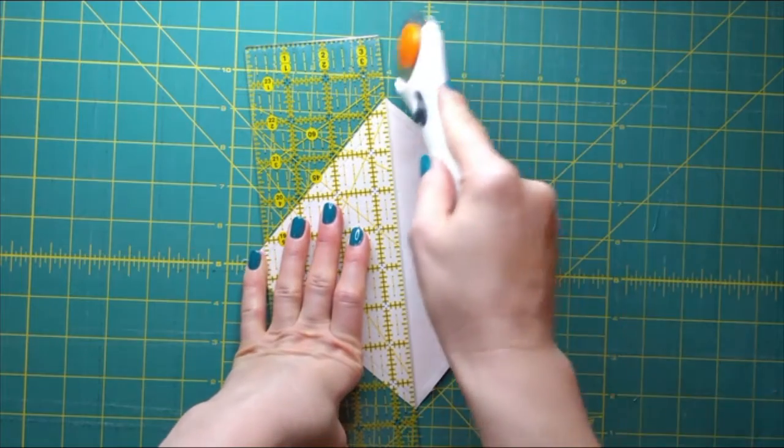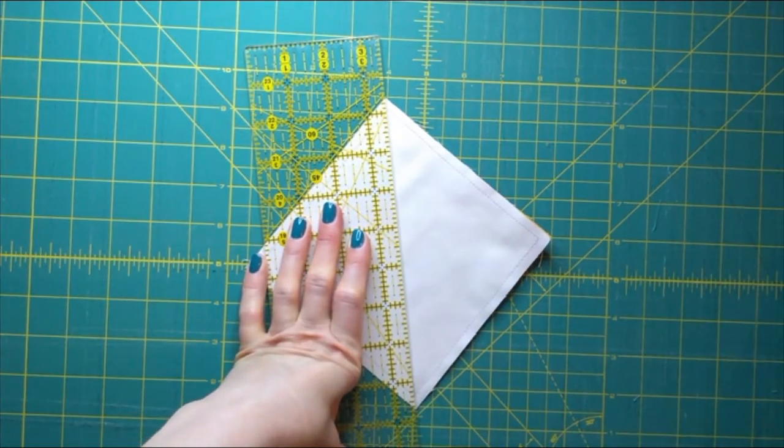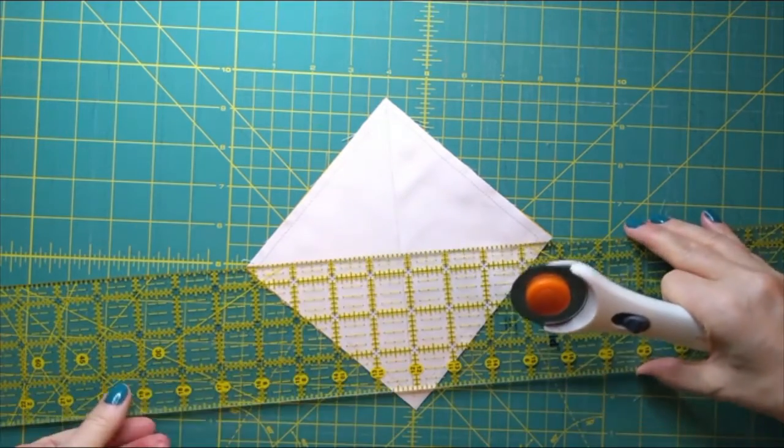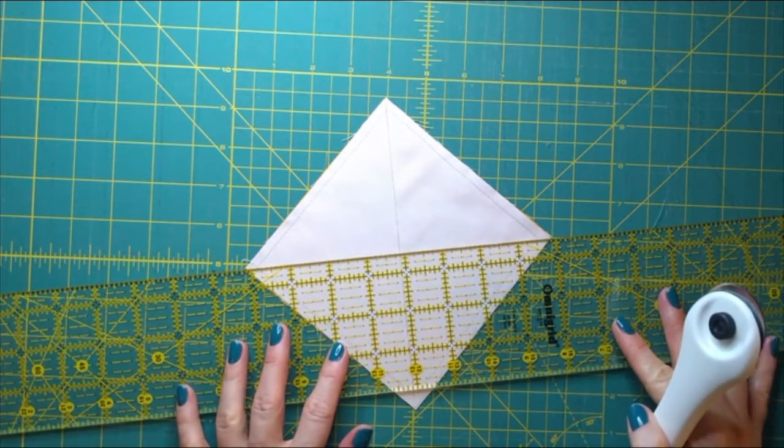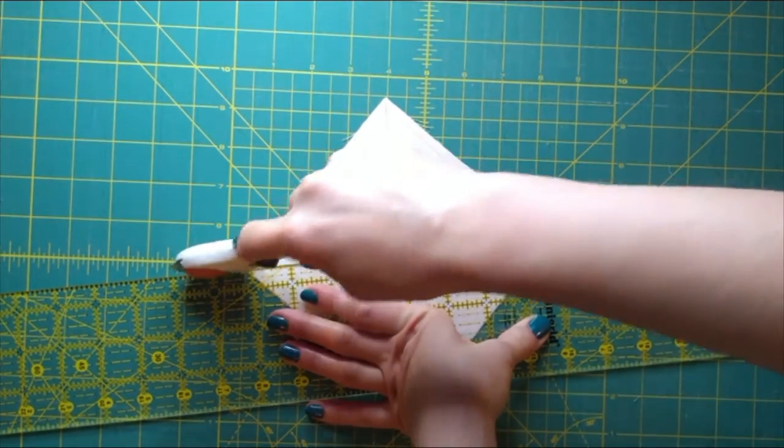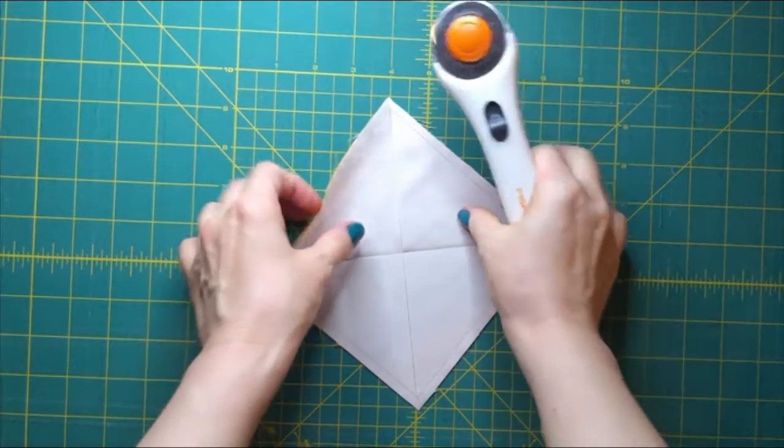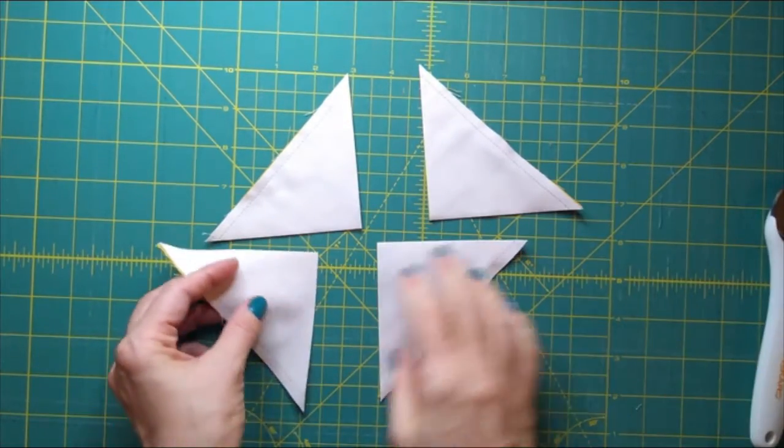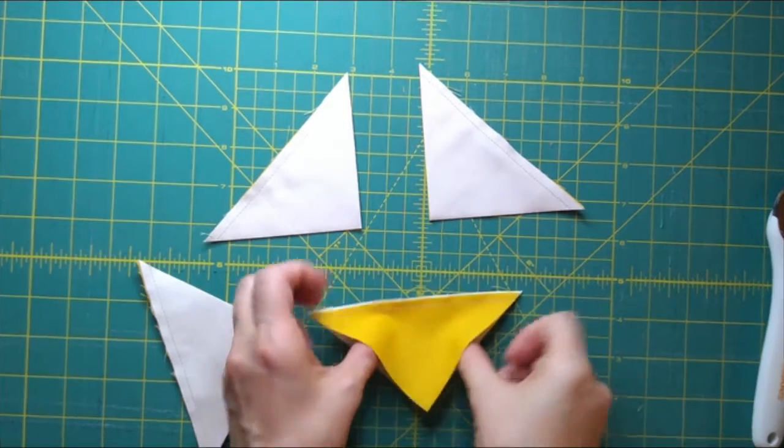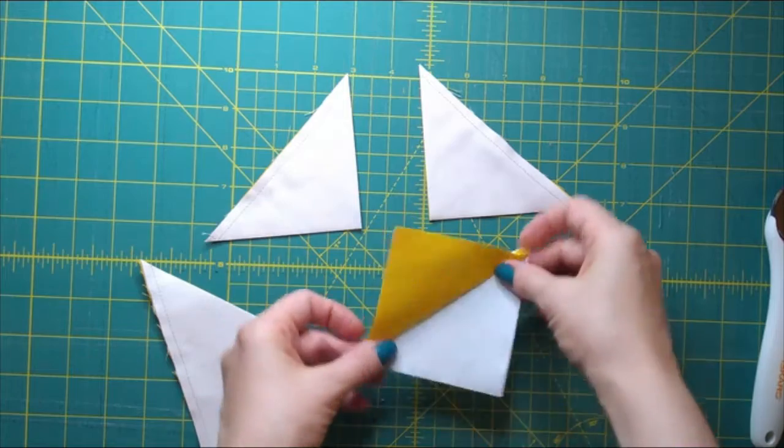So I'm going to cut this way and then without moving the piece I'm going to move the ruler and line it up on the opposite points. So now we have four pieces and then we will press these open and we will have our little half square triangles.